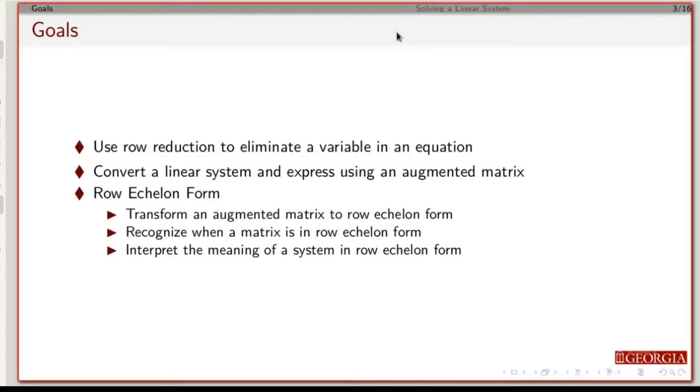You should be able to take a linear system and write it as an augmented matrix, and you should be able to then turn it into row echelon form, and you should be able to look at the system and recognize whether or not the matrix is in row echelon form, and once it's in row echelon form, you should be able to interpret it and tell us what the meaning is from the resulting system and how it relates to the original system of equations.